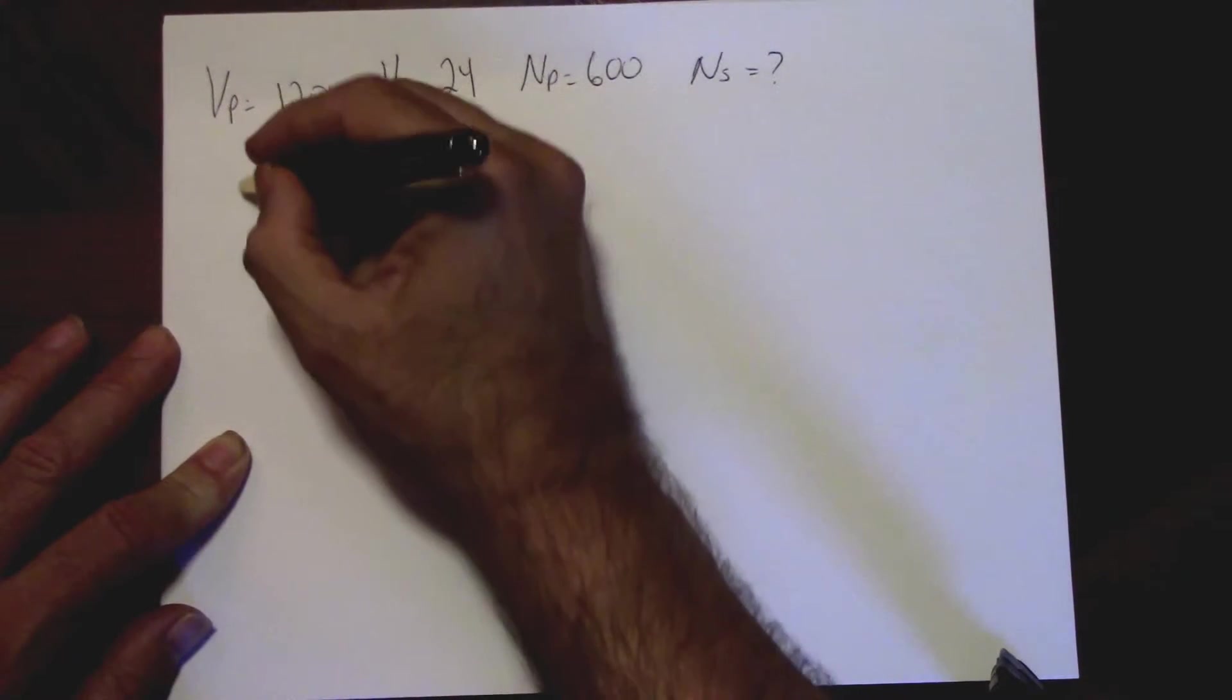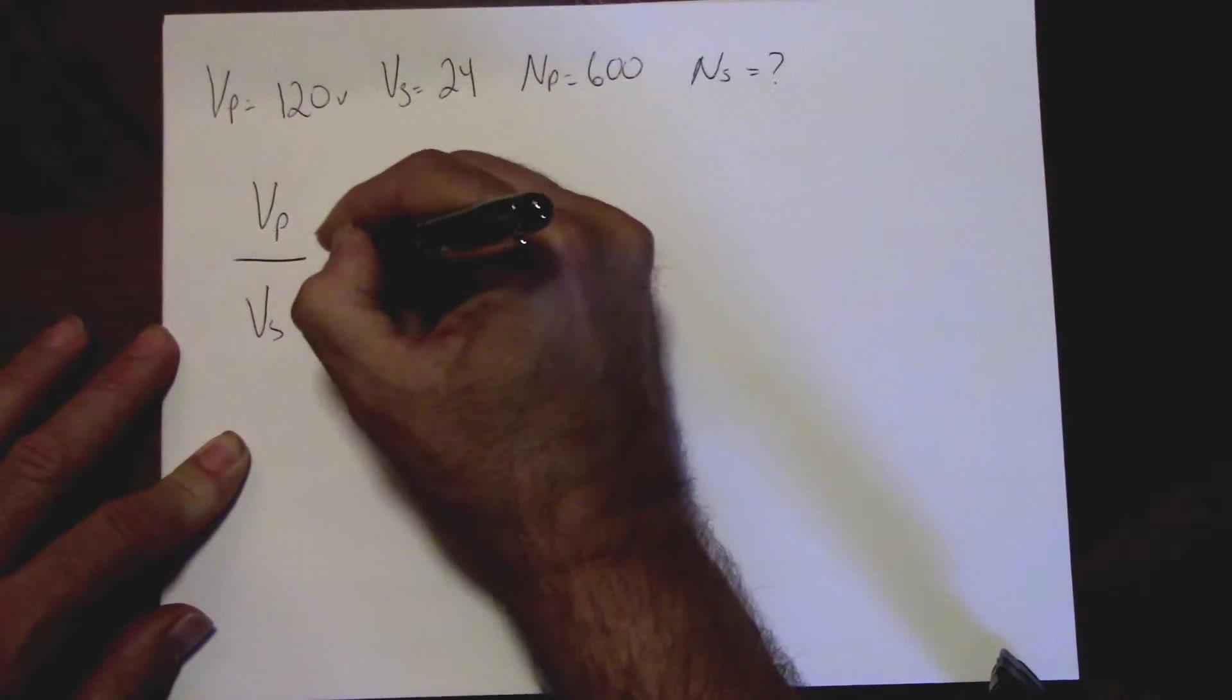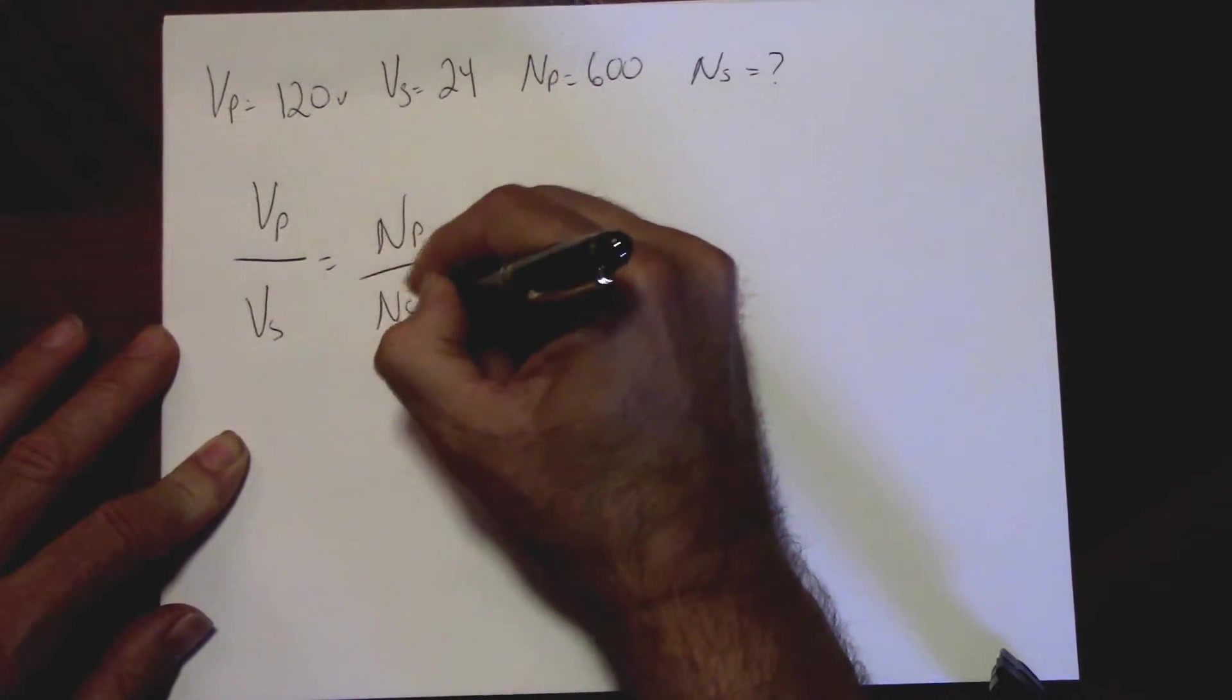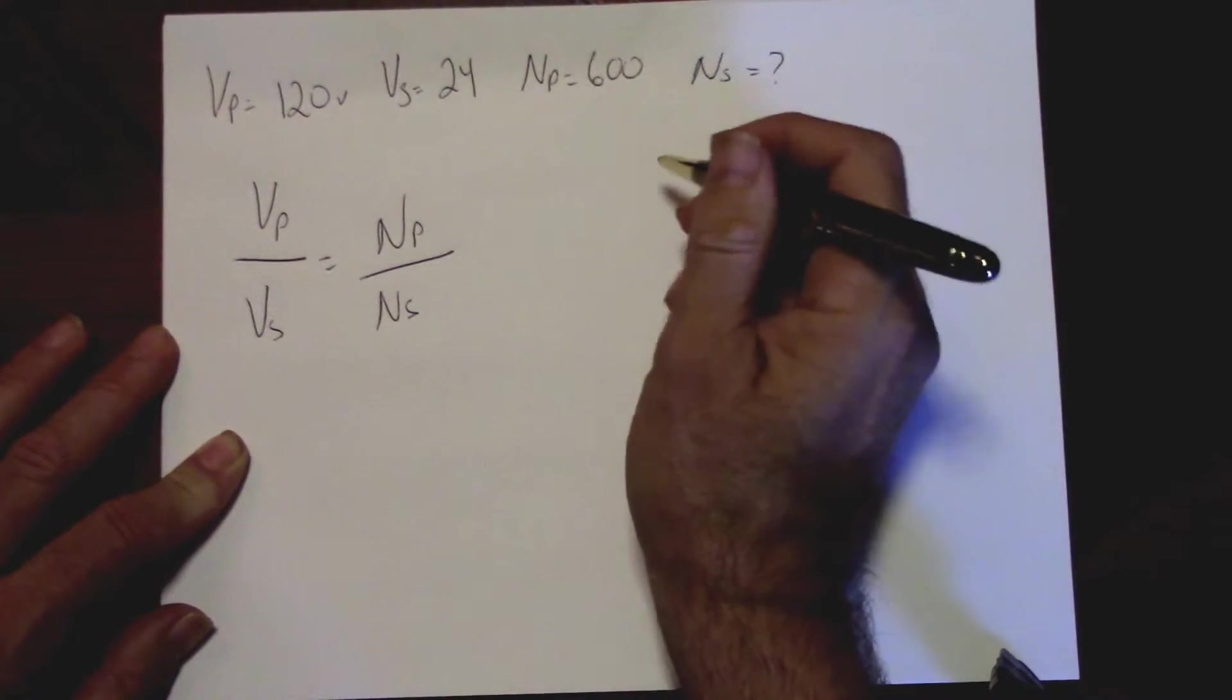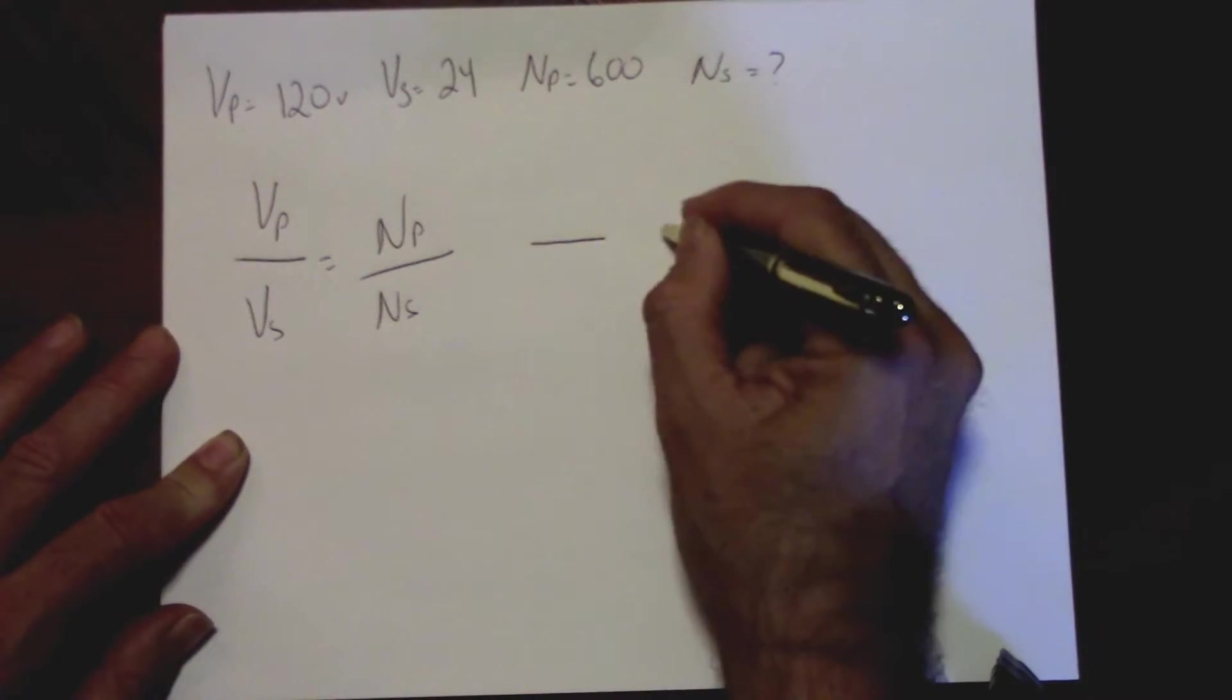Okay, voltage primary over voltage secondary equals the number of turns primary over the number of turns secondary. The way I do this is I just fill in what I need to know.